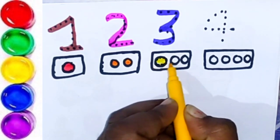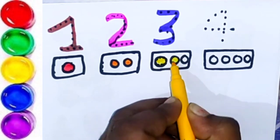Yellow color, three circle. One, two, three.